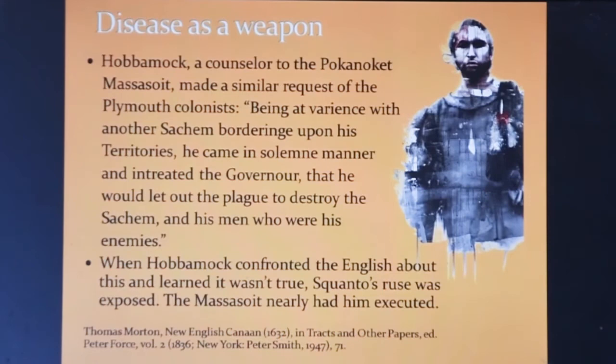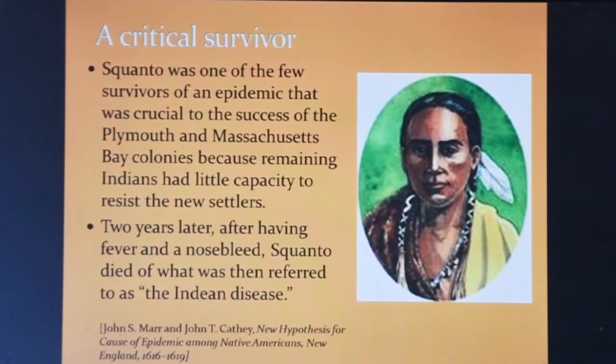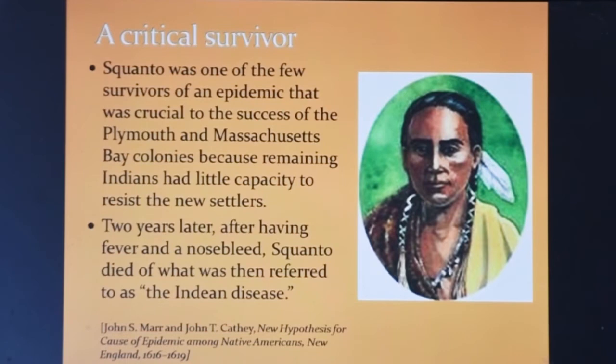Hobbamock, who served also as an intermediary between the Massasoit and the colonists, believed that the governor could let out the plague and destroy the Sachem and his men, giving him control over the tribe. Though he had survived the great dying and lived to serve as a translator for the English, Squanto eventually died two years later of what was referred to as the Indian disease.